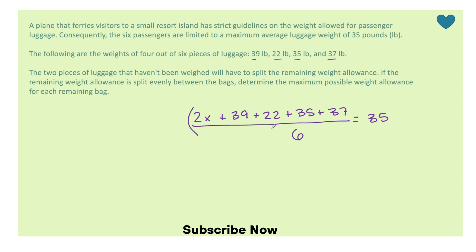So the first thing I would do when I go to solve this is I would multiply both sides by 6. So then I have 2x plus 39 plus 22 plus 35 plus 37 equals 35 times 6, a total of 210 pounds.